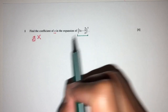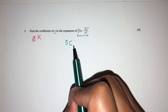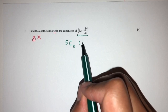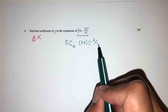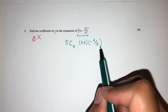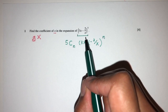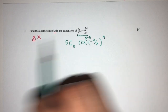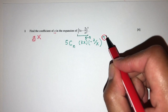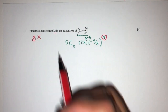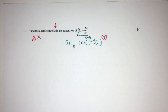How would you expand this? You will have 5 combination n, and the first term is 3x, and here you will have minus 2 over x. Here we have n, this will have to be n as well, and here we have 5 minus n. We have to choose n such that the whole expansion will give something in x, because that is the only thing we care about in this question.